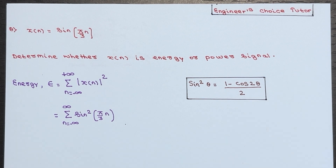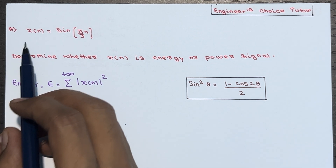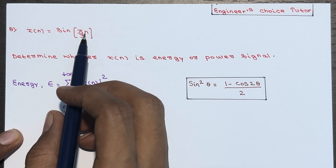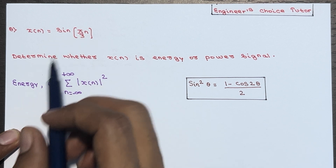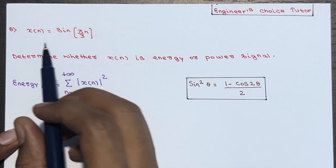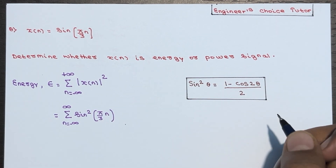In this lecture we'll see another example on energy or power signal. x(n) is given as sin(π/3 · n). Determine whether x(n) is an energy or power signal.